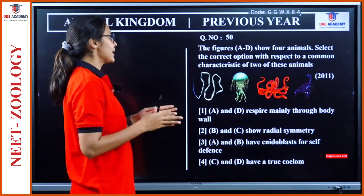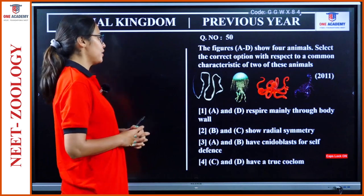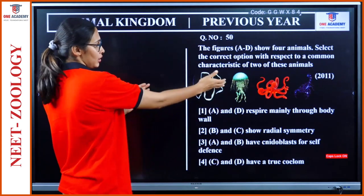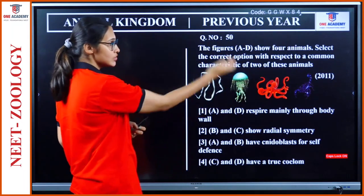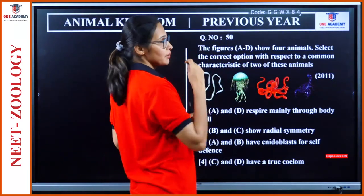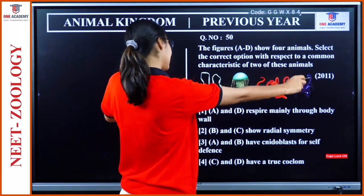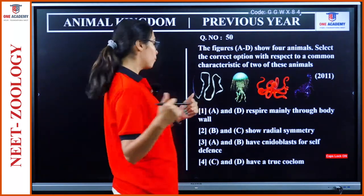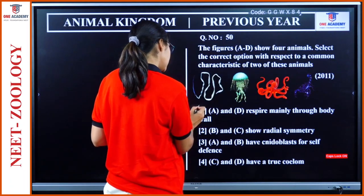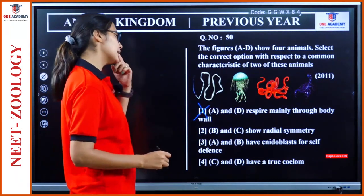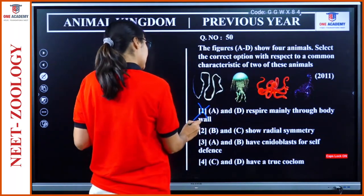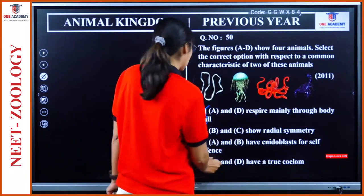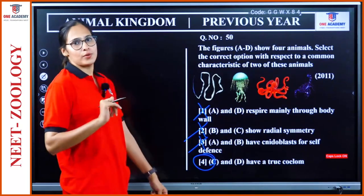Question 50: Four animals shown — A is Platyhelminthes, B is Cnidaria, C is Mollusca, D is scorpion (Arthropoda). A and D respire mainly through body wall — D has book lungs, so wrong. B and C show radial symmetry — C is Mollusca, not radial — wrong. A and B have cnidoblast — A is Platyhelminthes, no cnidoblast — wrong. C and B have true coelom — octopus (Mollusca) and Cnidaria... actually C (Mollusca) and D (Arthropoda) — scorpion and octopus both have true coelom. Option 4 is the answer.